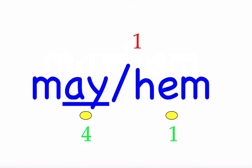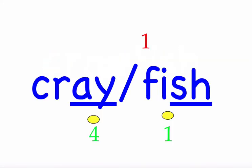The next word is 'crayfish.' A crayfish looks like a small-sized lobster. First syllable 'cray' — three sounds, C-R-A-Y. Second syllable 'fish' — three sounds, F-I-S-H. Mark the word. Crayfish.